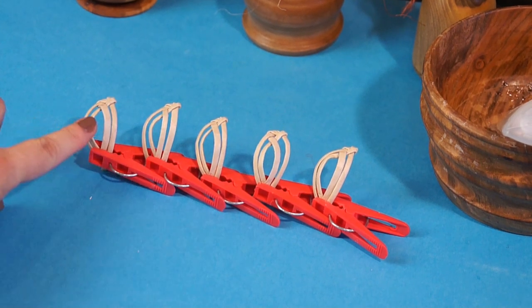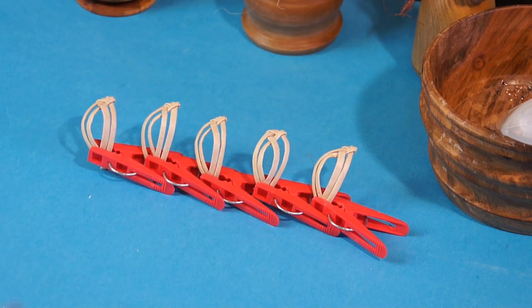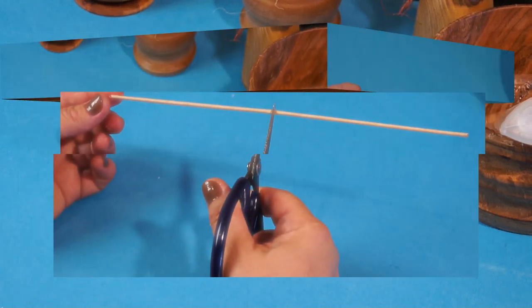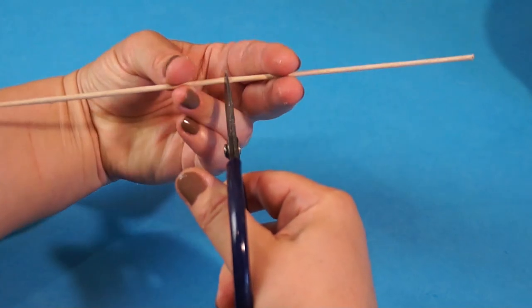As you must have noticed, every petal has been made of one tube cut into halves, which means 5 tubes are enough to make 5 petals. Now let's weave the flower core.